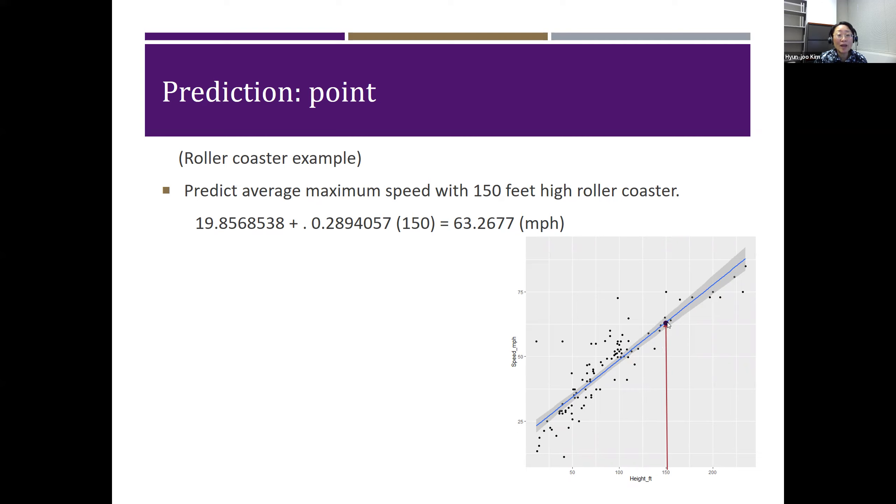Since y hat value is depending on beta not hat and beta one hat, it also had some variation. We can talk about interval estimate of y hat. The gray area around the blue line is showing the automatically calculated 95% confidence interval for y hat.